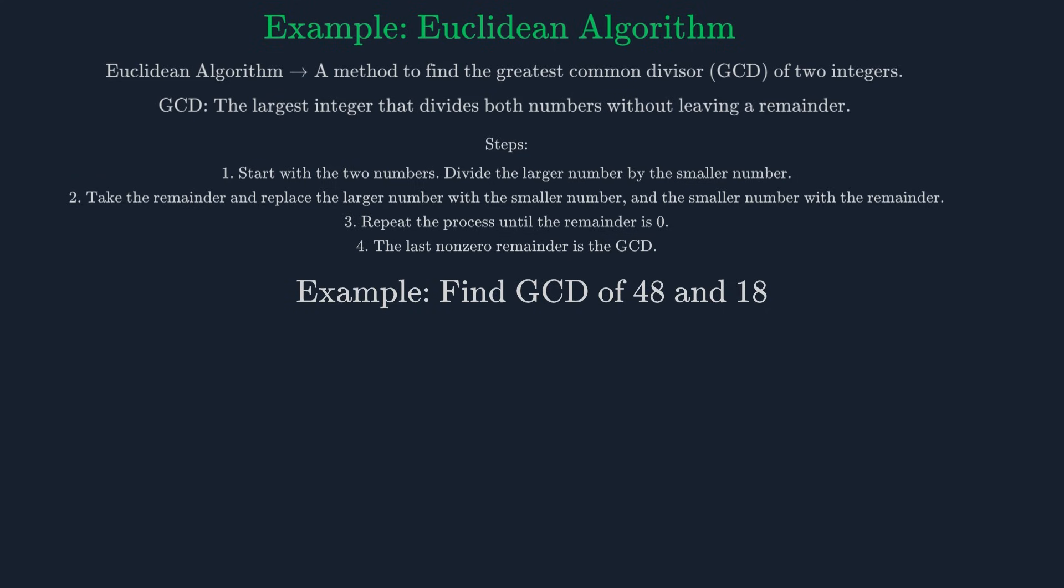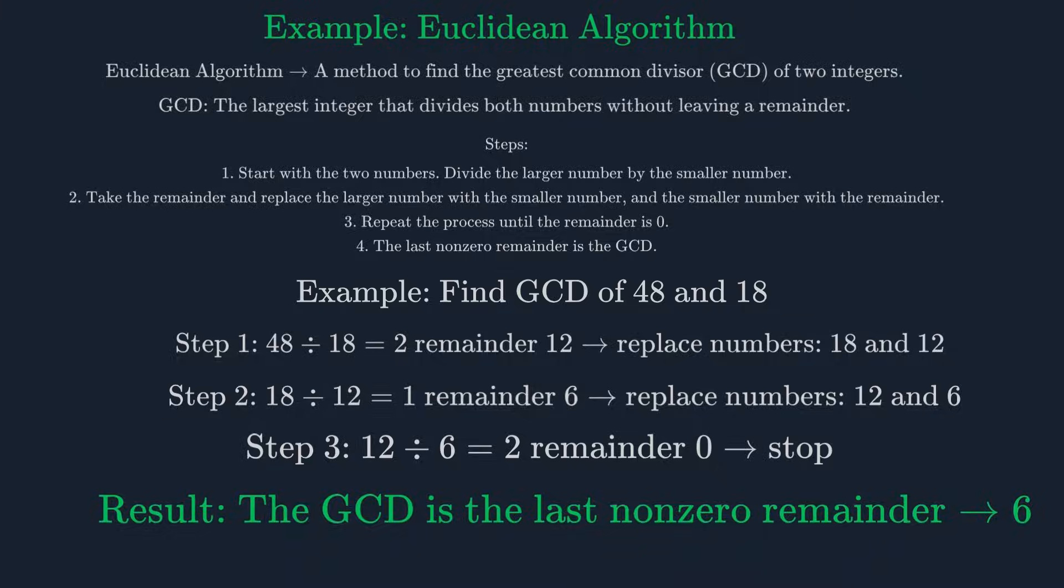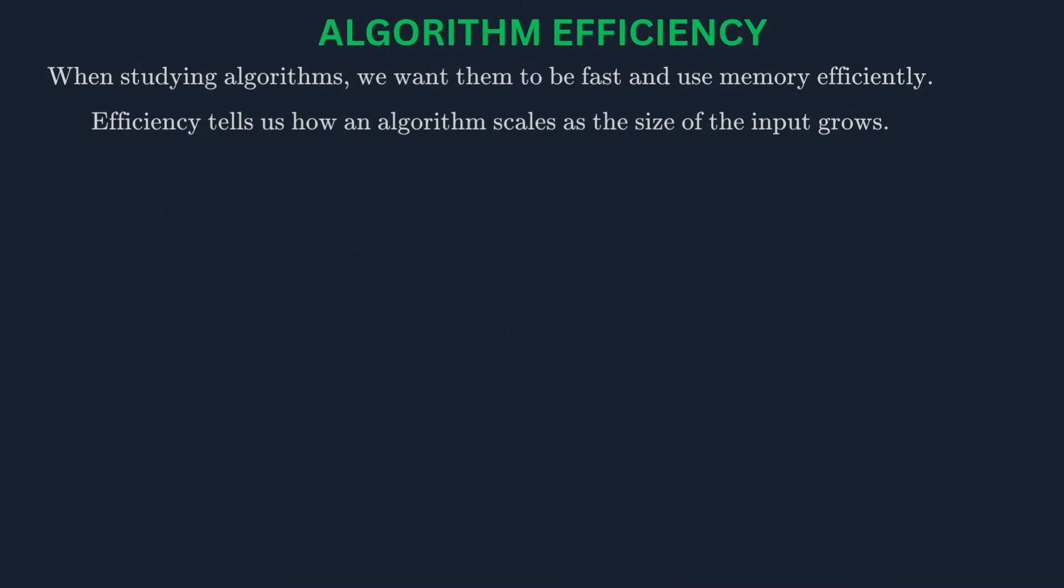The algorithm works by repeatedly dividing the larger number by the smaller number and taking the remainder. We start with 48 and 18. 48 divided by 18 is 2 with a remainder of 12. Now we repeat the process with 18 and the remainder, 12. 18 divided by 12 is 1 with a remainder of 6. We repeat again with 12 and 6. 12 divided by 6 is 2 with a remainder of 0. The algorithm stops when the remainder is 0. The GCD is the last non-zero remainder, which is 6.